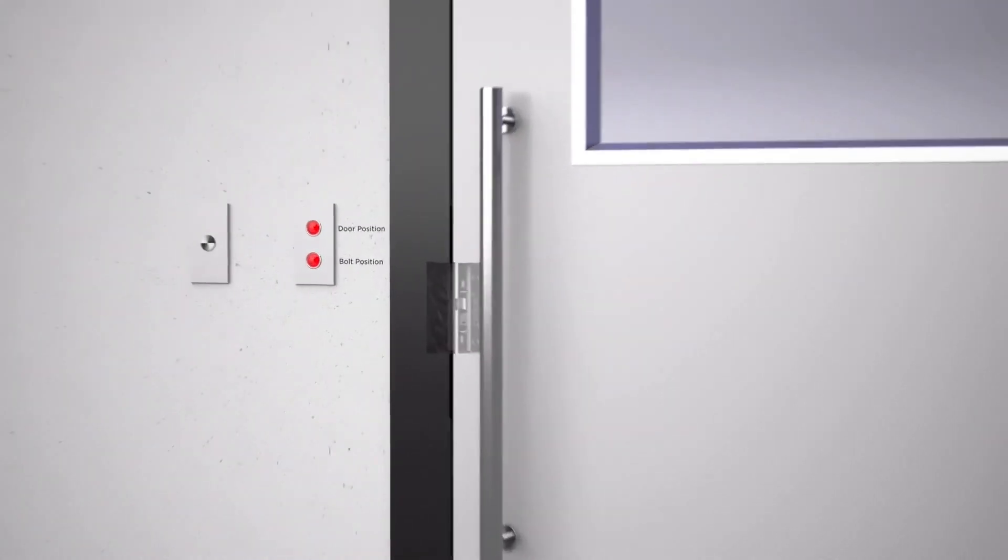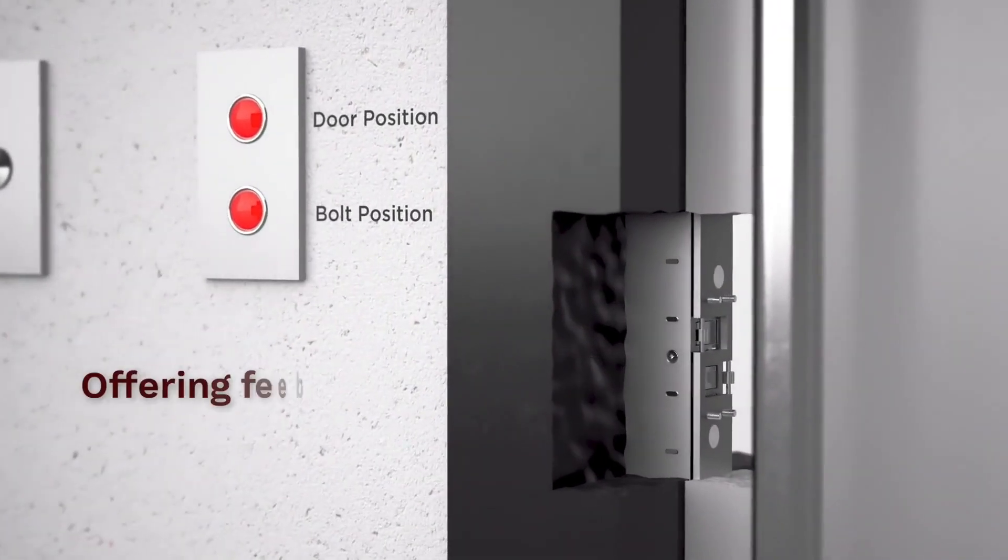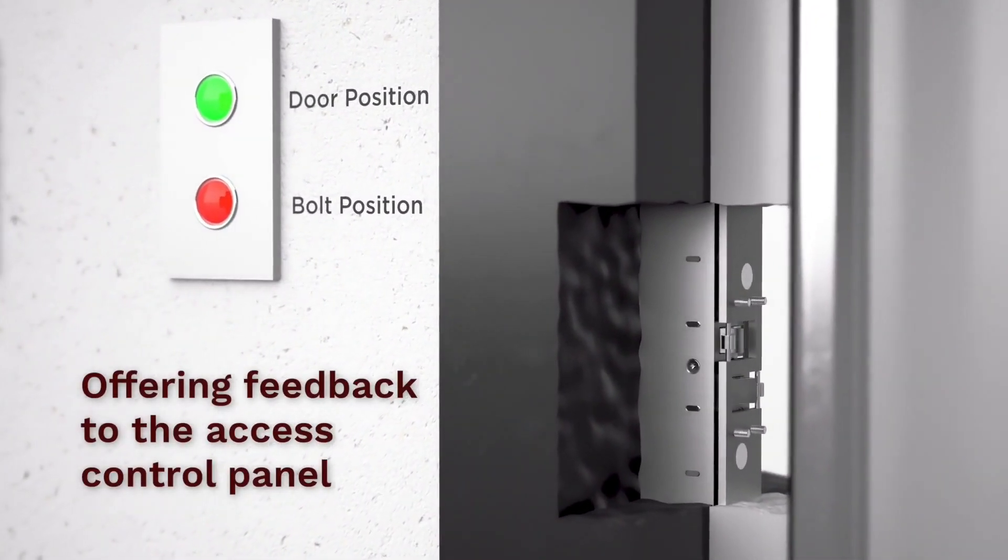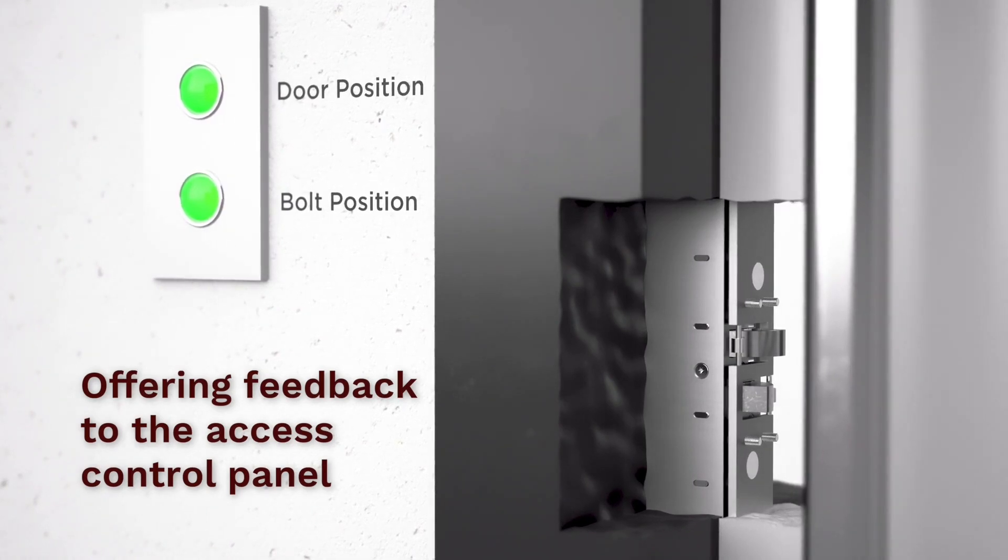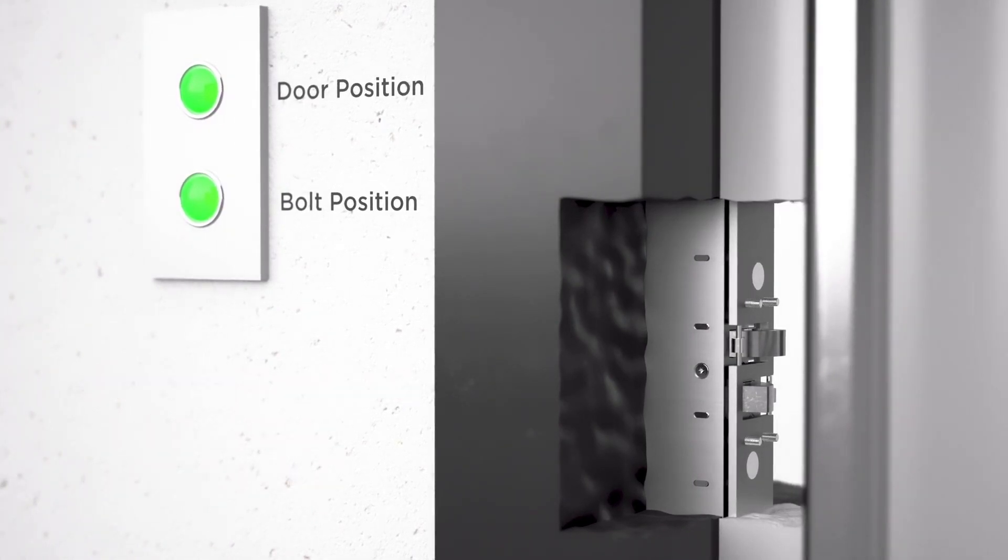The YD-30 locks offer feedback to the access control panel letting you know position of both the door and the bolt, which are critical to ensuring the security of your facility.